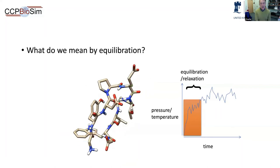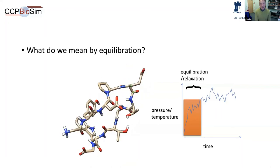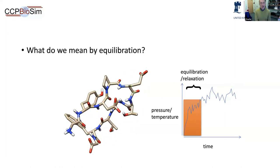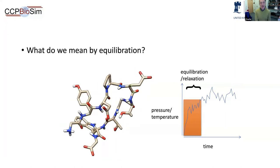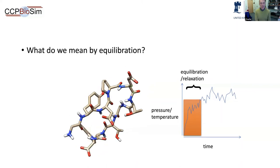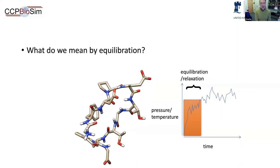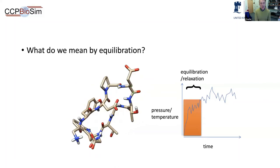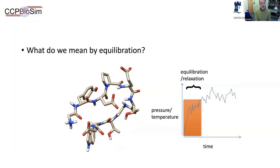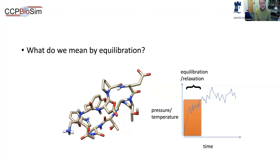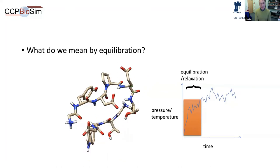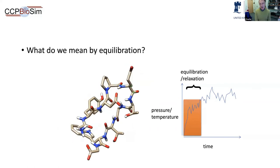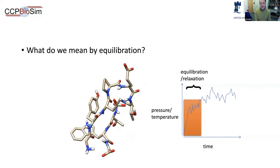For example, when we start our simulation, typically we don't have any velocities in our system, so our molecular system is effectively at zero or some very low temperature. We've added some water molecules; it's in a periodic box, but the density is not quite right and the pressure in the system is not right. So what happens as we begin our simulation is we can monitor what's actually happening to the pressure and temperature.